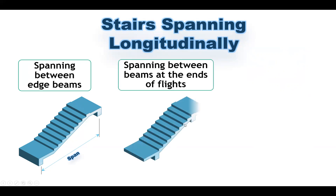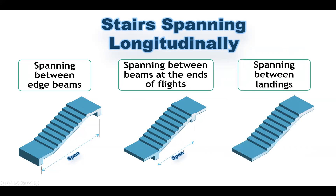The second type is spanning between beams at the end of the flight, where the flight is supported on one beam and another beam, and the landing acts as a cantilever. The span goes from center line to center line of the beams. The third type is spanning between landings, where the landing itself works as a beam — there is no separate clear beam. The span is considered from the center line of one landing to the center line of the other landing.